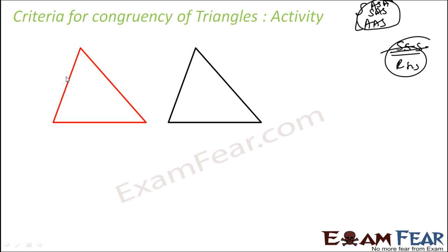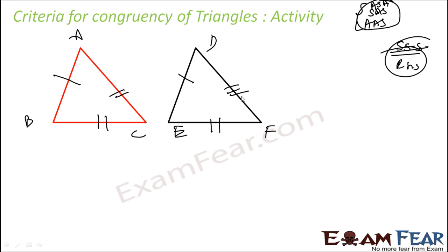So SSS is Side, Side, Side. If you draw two triangles with all the same corresponding sides — for example, triangles ABC and DEF — if AB is equal to DE, BC is equal to EF, and CA is equal to FD, then you will notice that these two triangles are congruent. You can overlap these two triangles on each other. You can try this activity with as many triangles as possible and you will see that they will overlap.